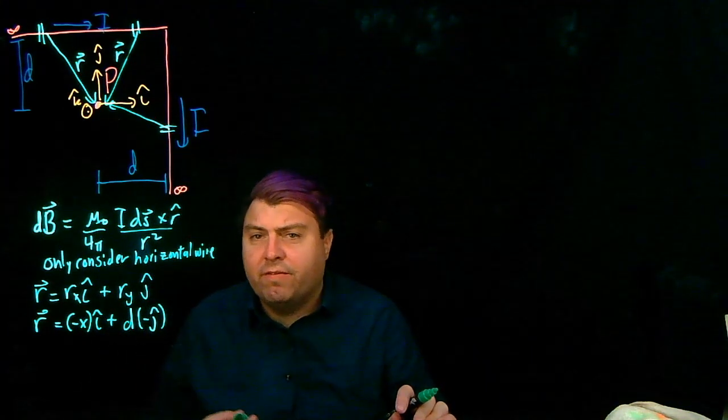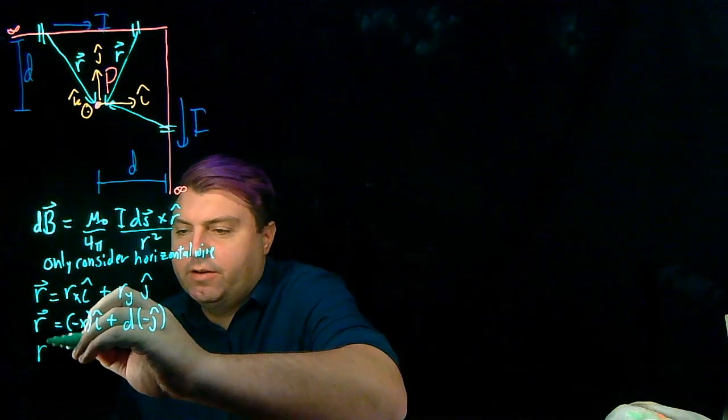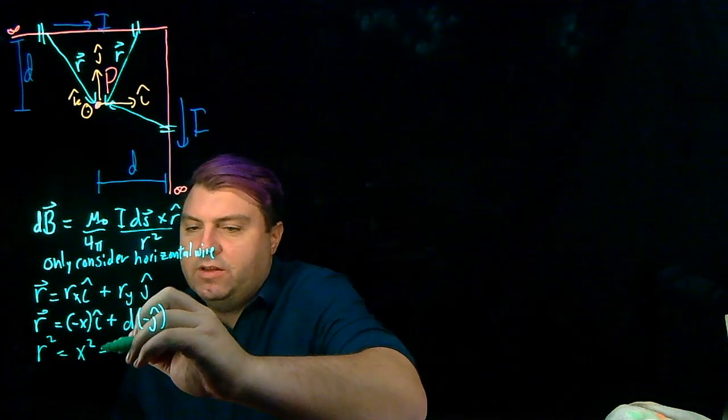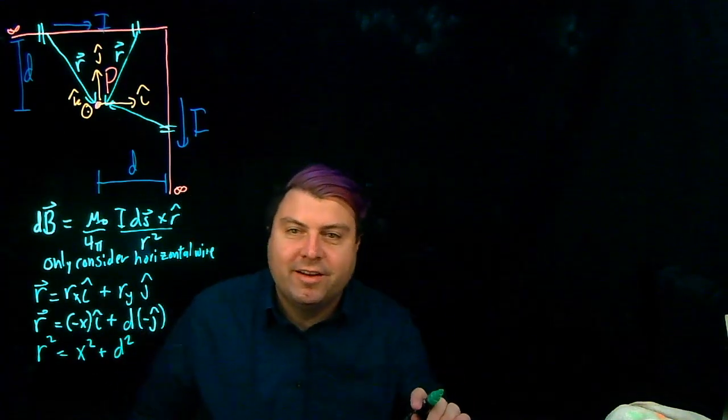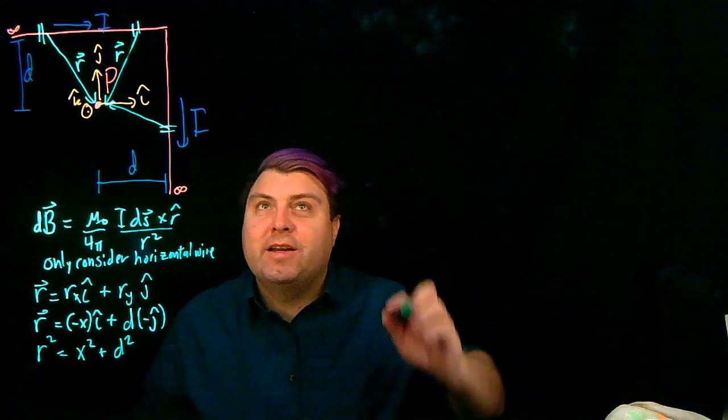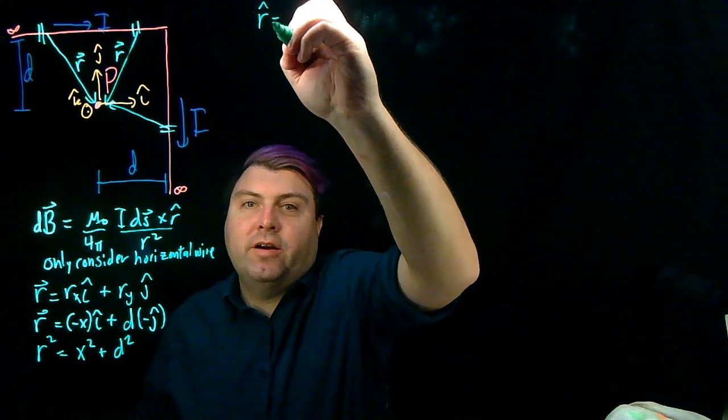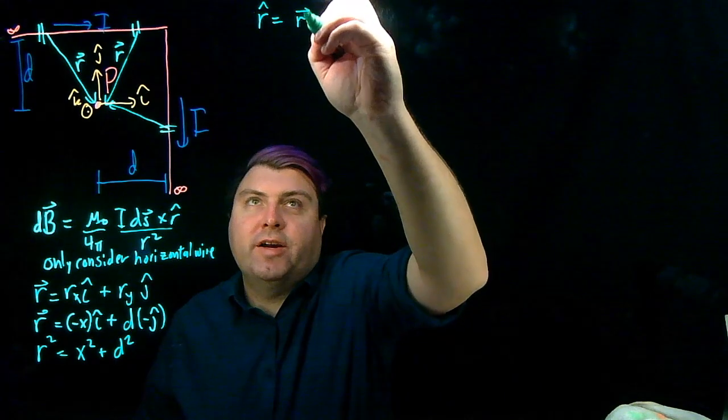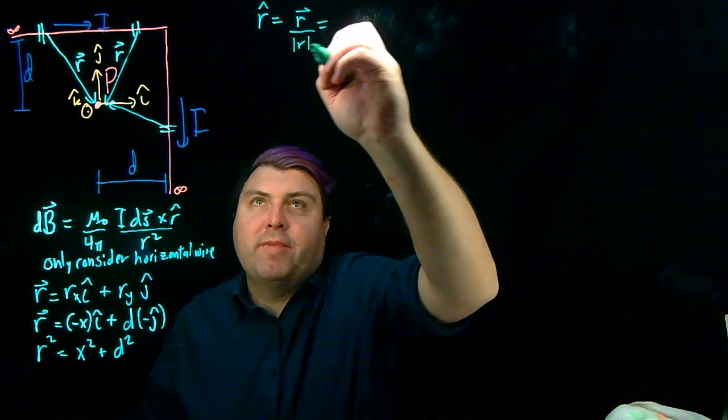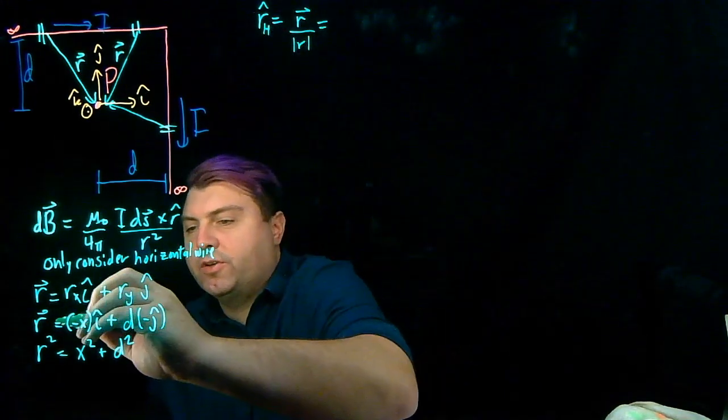So from this, we can then find r squared, x squared plus d squared. And we've run a little bit of space down here so we can get our r hat up here. Our r hat definition is r vector divided by the magnitude of r. This is for our horizontal contribution.